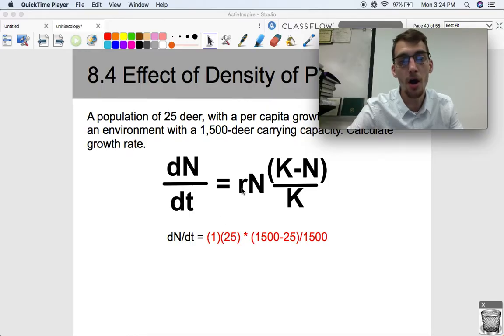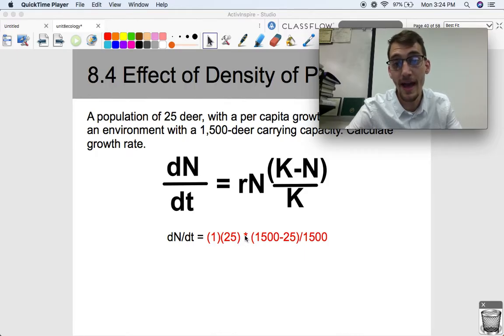So if we sub in all of our variables into this equation, we plug and chug. Here's our growth rate. R is 1, our per capita growth rate is 1. Our population size is 25. And then we multiply that by our carrying capacity minus the population size divided by the carrying capacity.